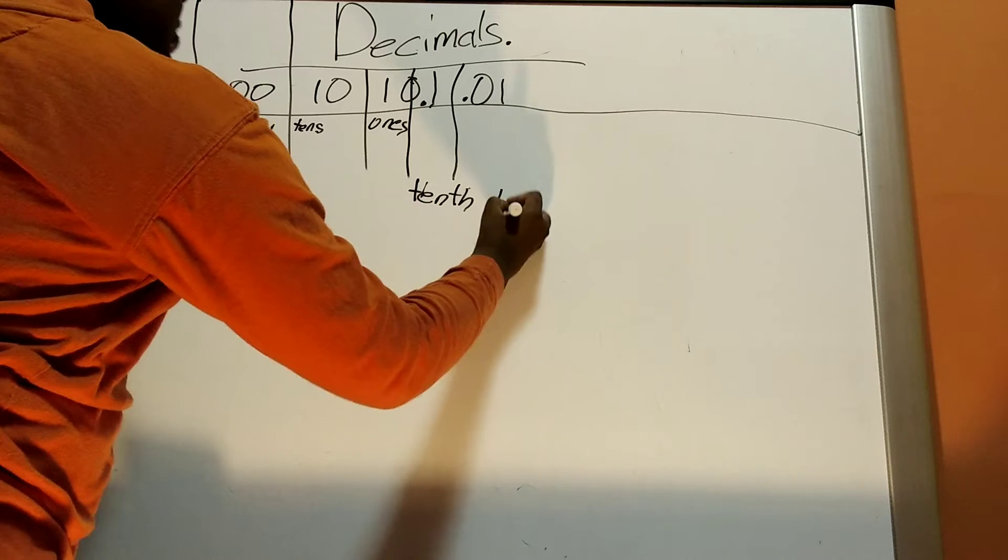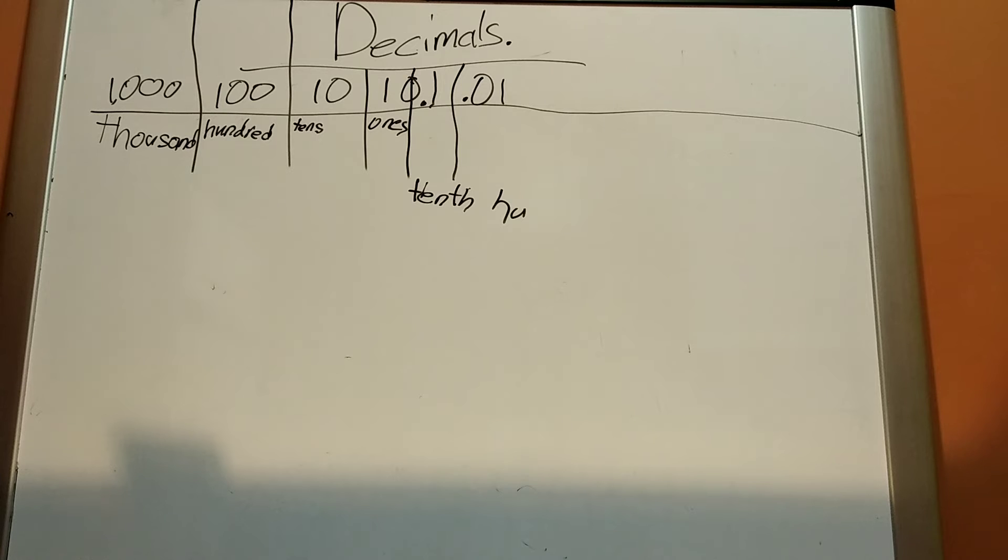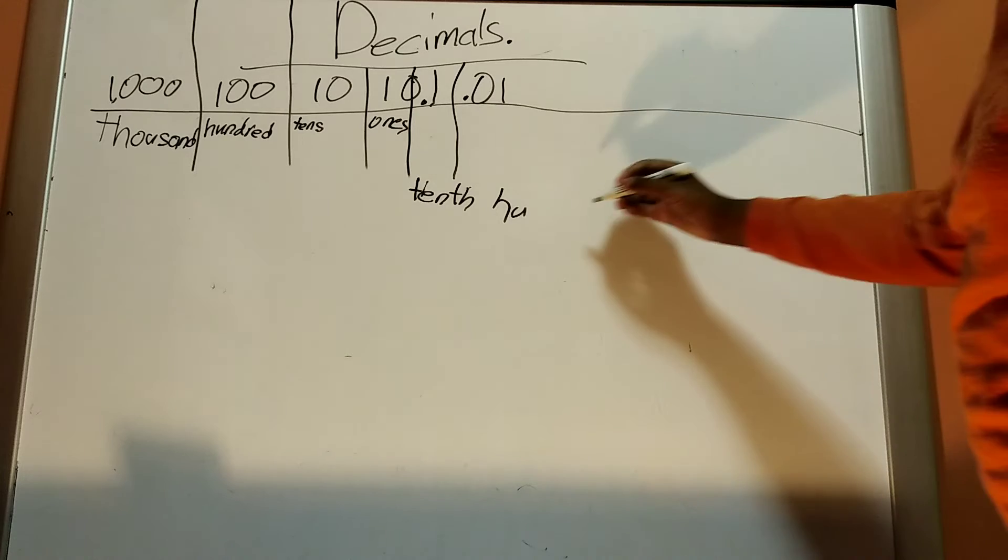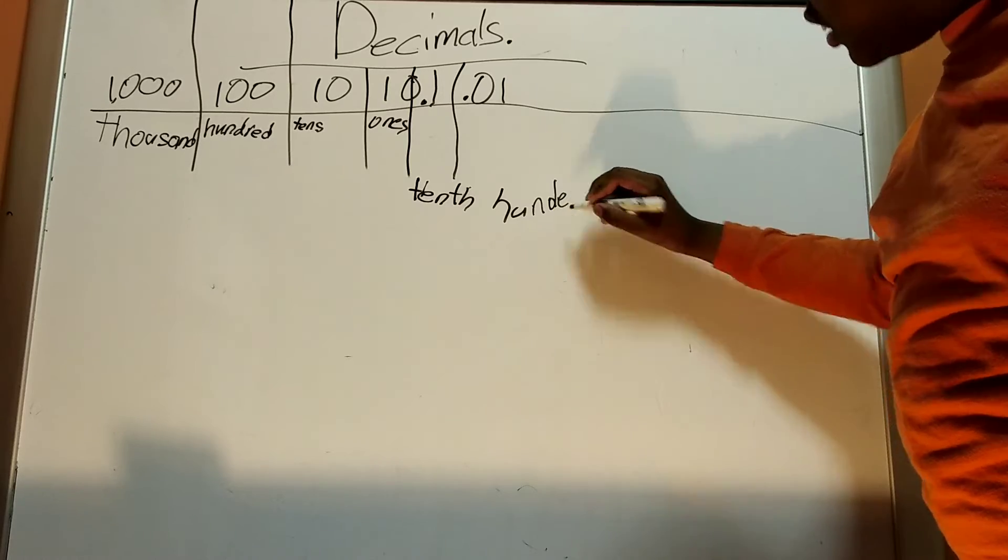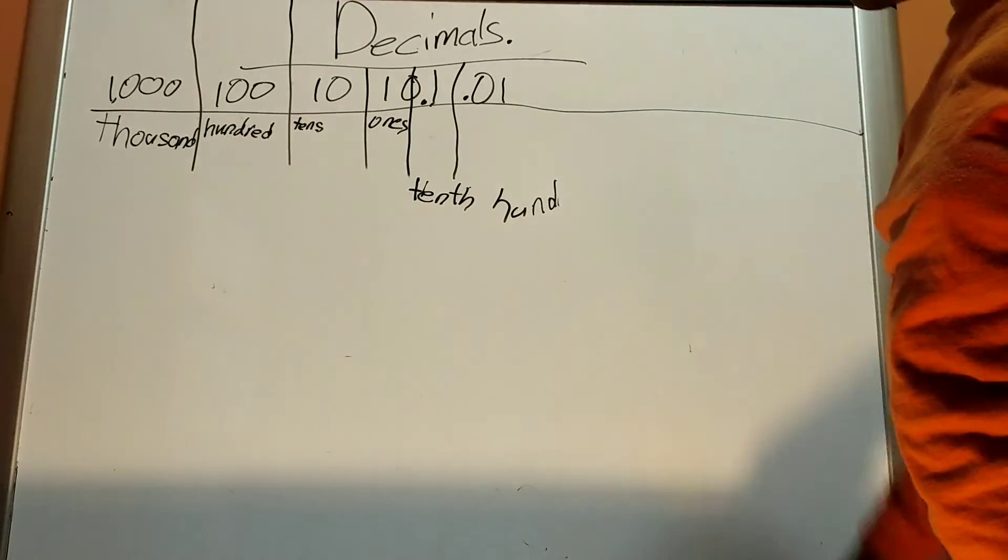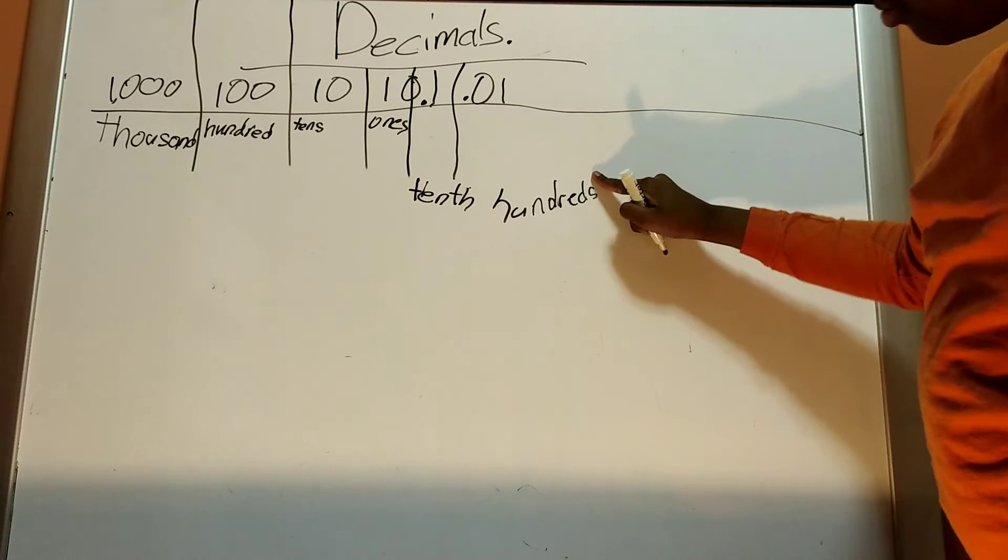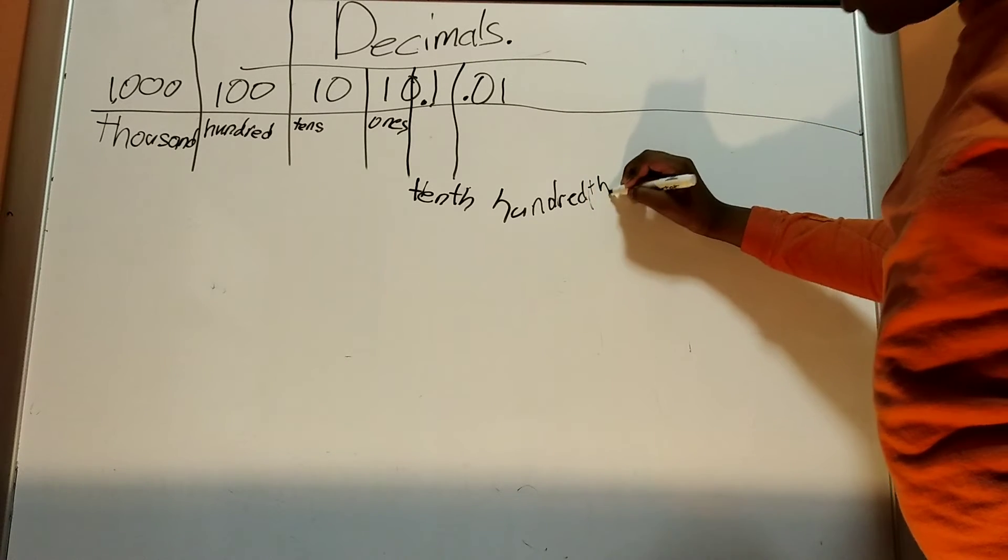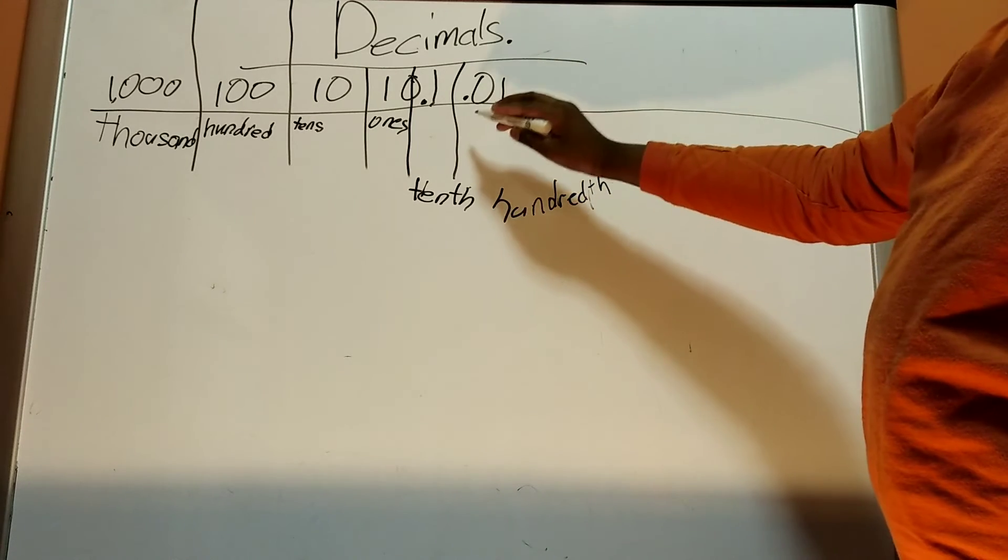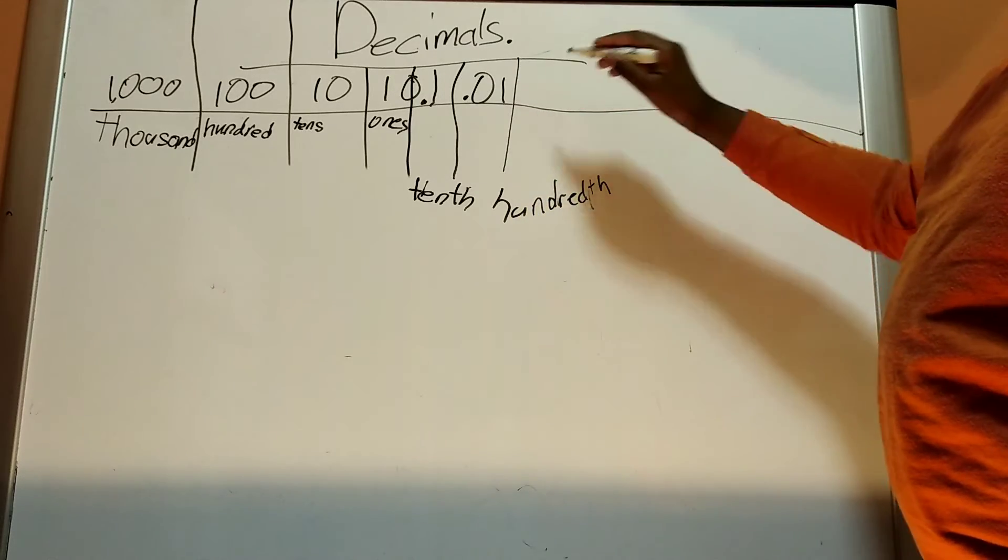Then you have hundredths. Just continue spelling the number the way you know how to. Dredths. But don't put the S there. Instead of putting the S, you would put a TH. And then you could keep on going. All you'd have to do is add one more zero. The next place you go, which would be the thousandths.